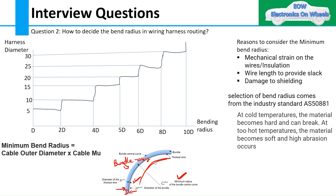What are the reasons for taking the minimum bend radius? We have written three major reasons where we have to consider the minimum bend radius and why we consider it. The first reason is mechanical strain on the wire and insulation.